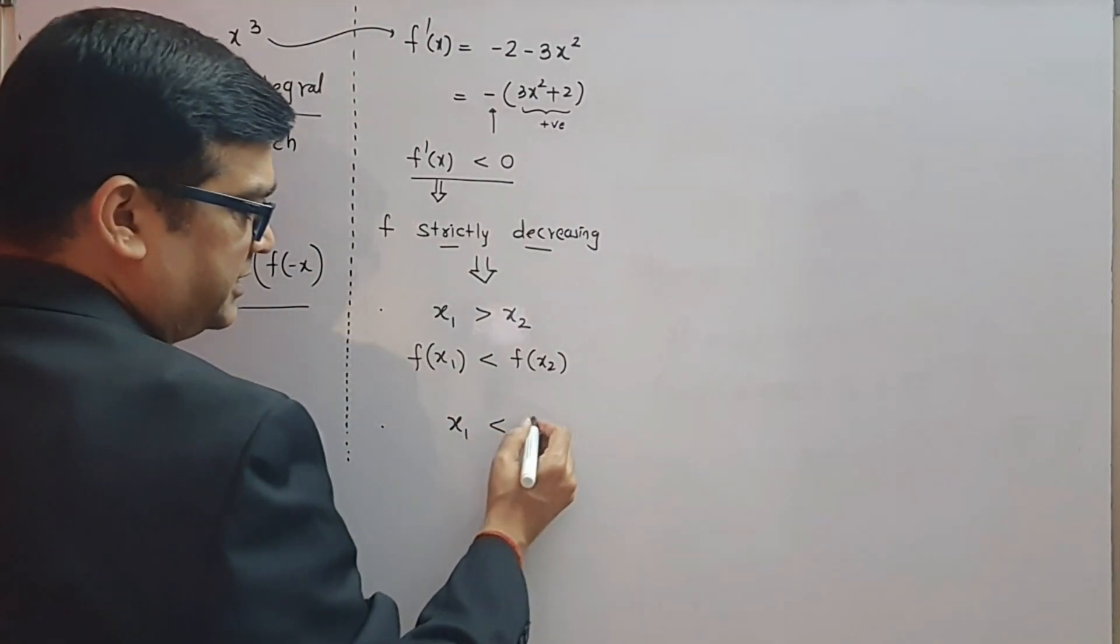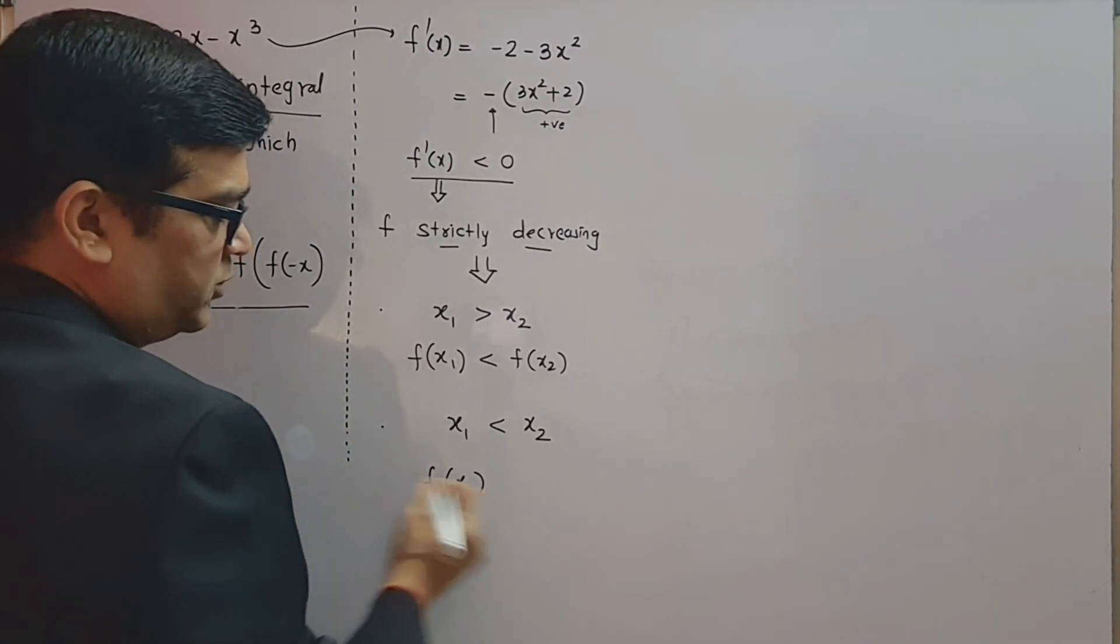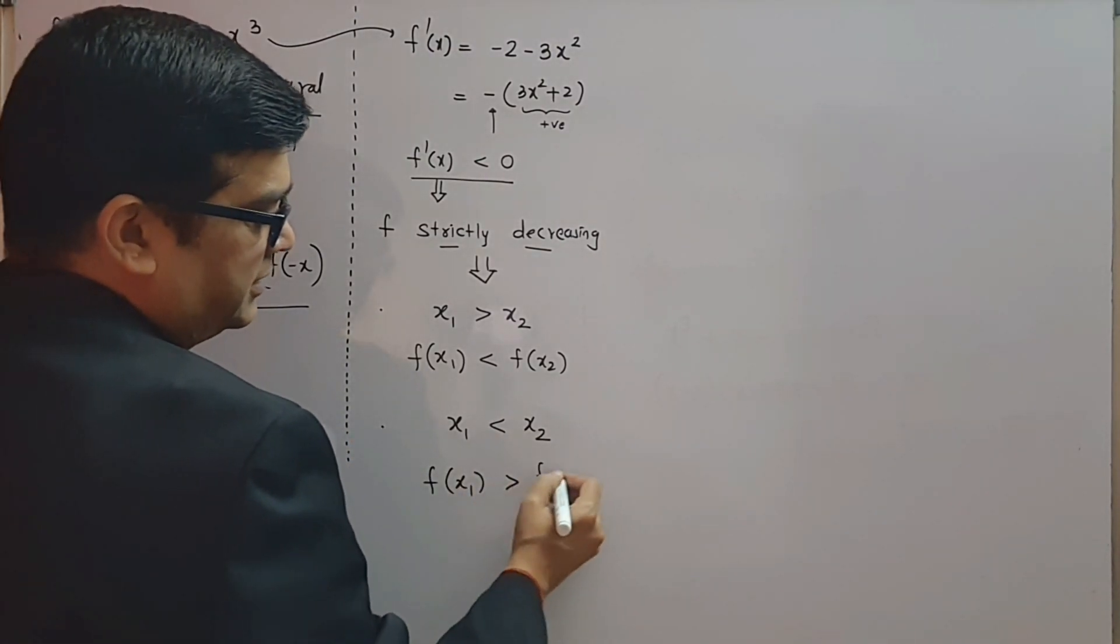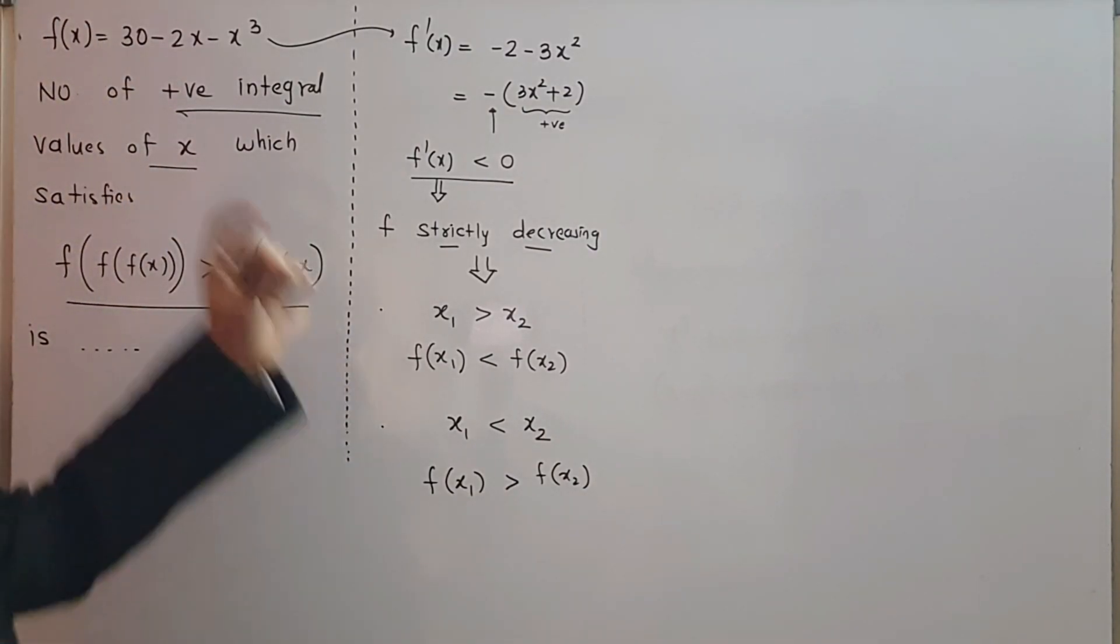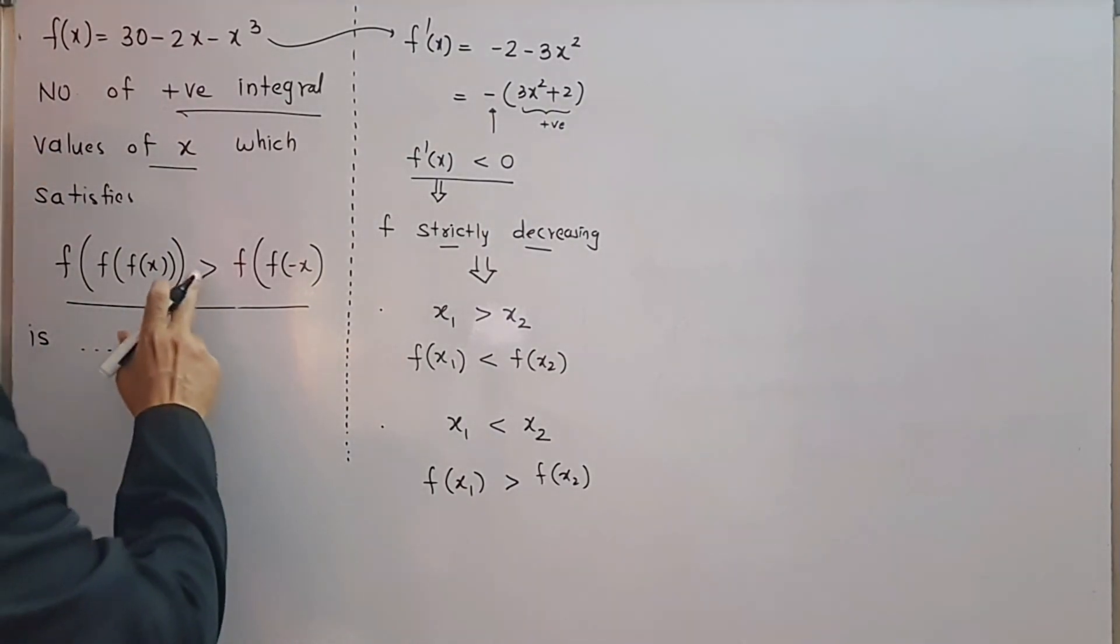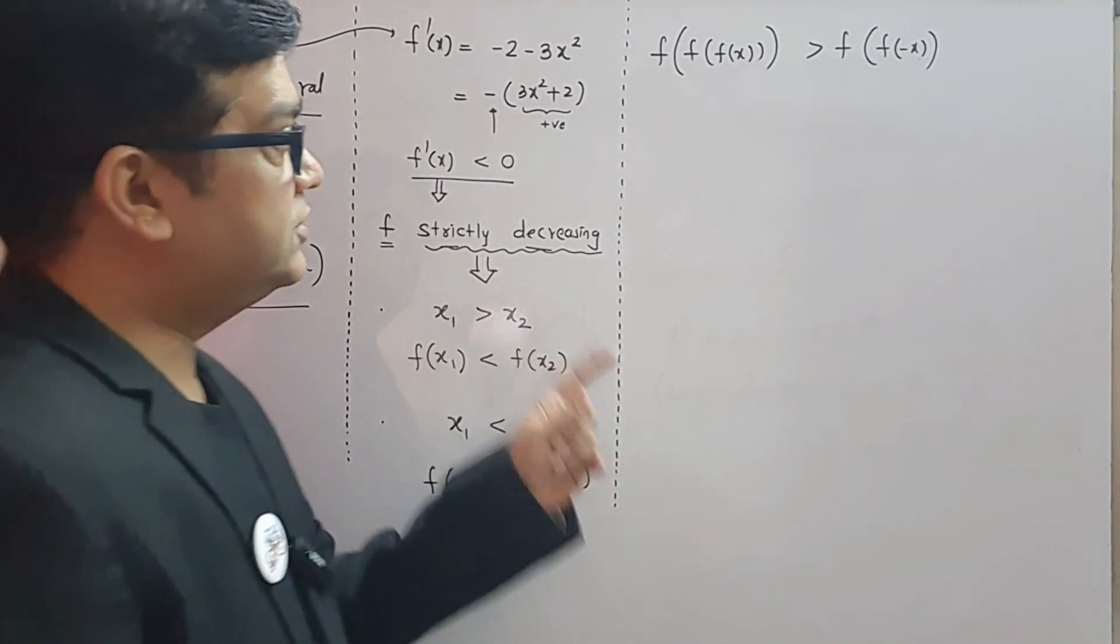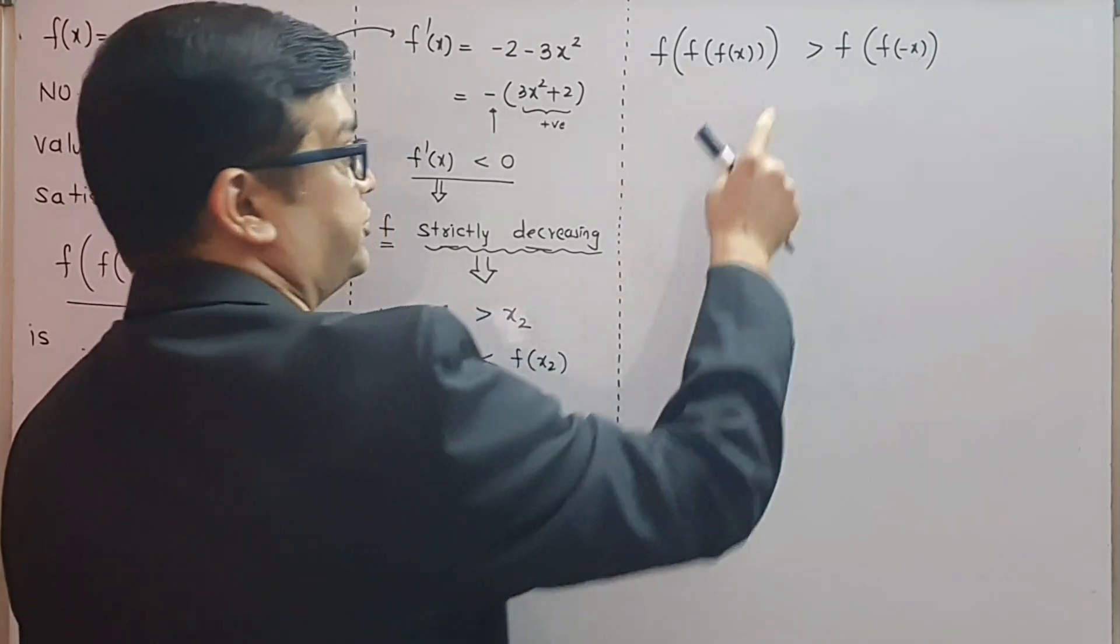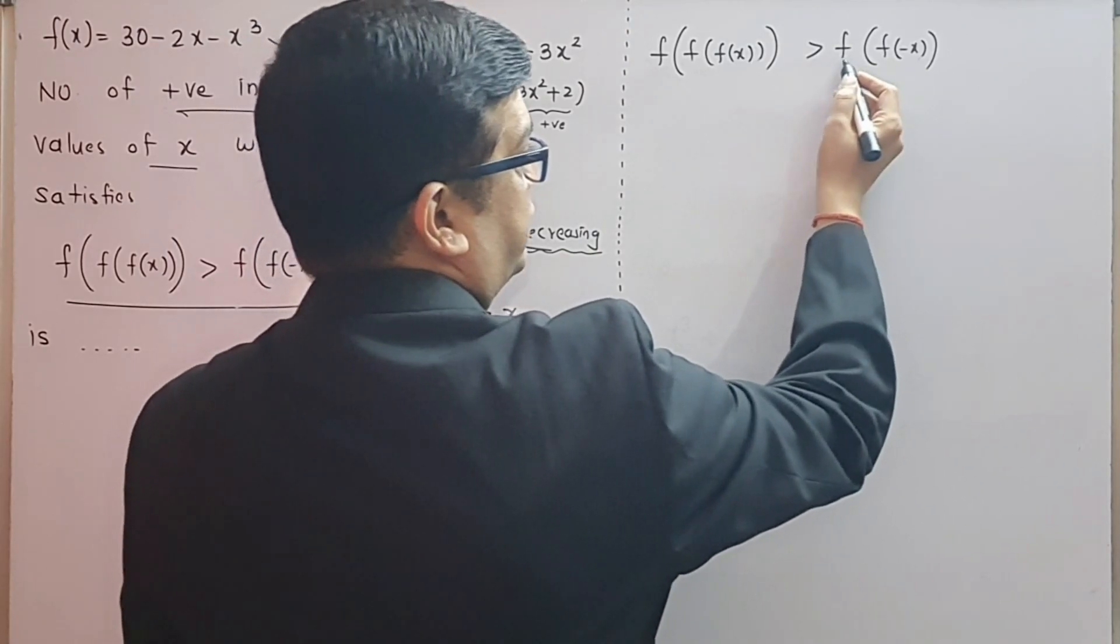then the value of function at x₁ will be less than the value of function at x₂. This is a property of decreasing function. Or I may say if the input x₁ is less than input x₂, then the function value at this input x₁ will be greater than function value at this input x₂.